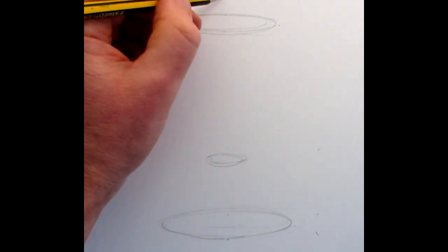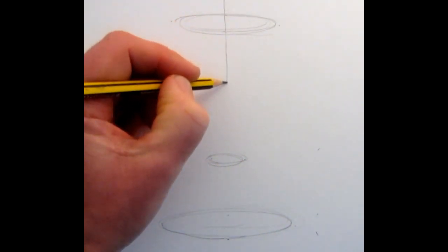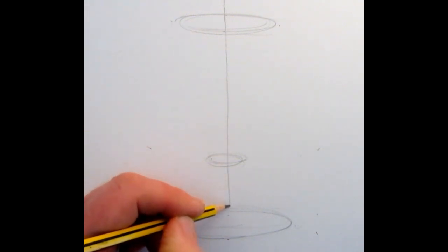For this drawing I start by drawing an ellipse at the top of the page, then a slightly larger ellipse towards the base of the page, and then a smaller ellipse towards the lower half of the page. Then I draw my line of symmetry down the center.